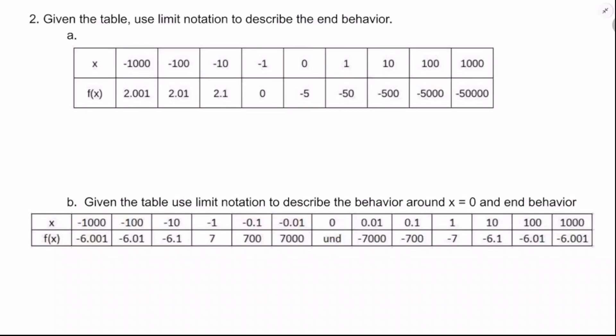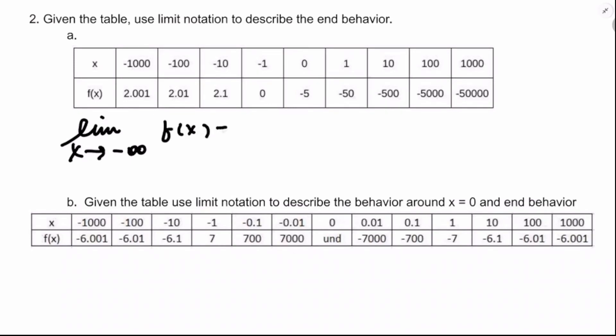If you've got a rational function, it'll have the same end behavior from both sides provided the degree in the numerator is less than or equal to the degree of the denominator. This one only has end behavior going one way, which would make it an exponential function. As x approaches negative infinity, going from 0 to negative 1,000 — getting really negative — f of x is getting closer and closer to 2. So the limit of f of x as x approaches negative infinity is 2.